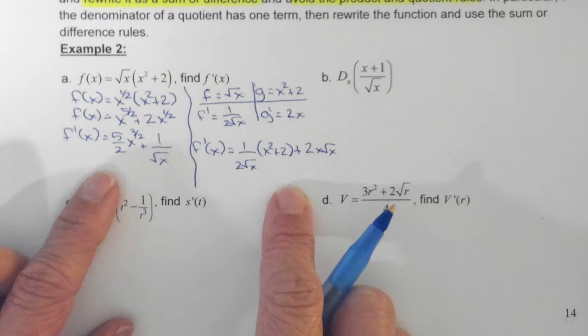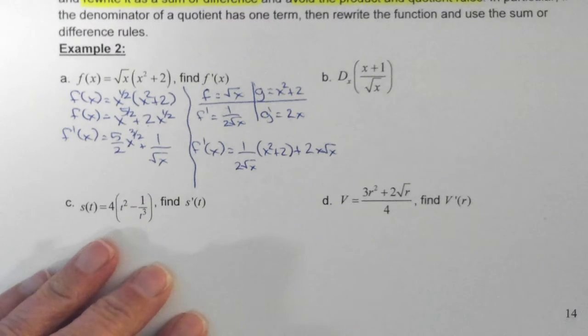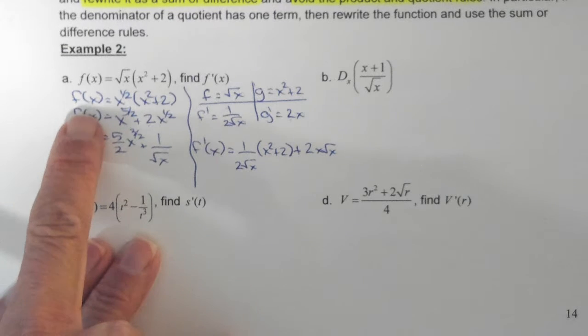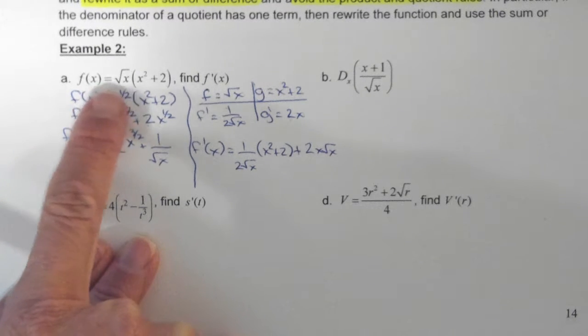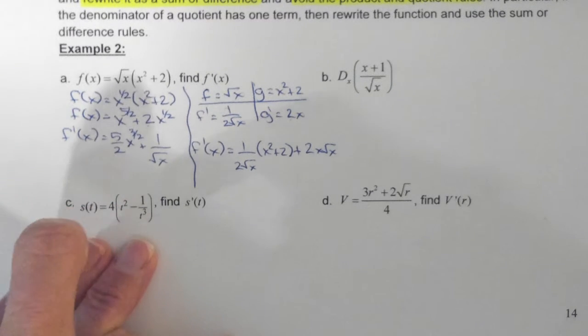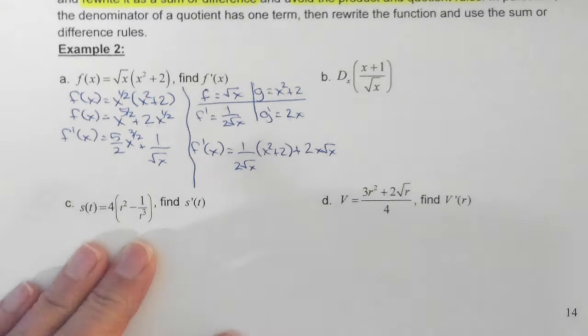Questions? So on the quiz, we're going to have to do it the first way you did it because we can't use the product or the quotient. Correct. Did everyone hear Bailey's question? She said, so on the quiz, we're going to have to do it this way. If you get a problem like this, yes, on the quiz because it only goes through 2.3. Okay. So you would have to get everything together in terms of addition or subtraction. You cannot use a product rule. Because the quiz isn't on the product rule.